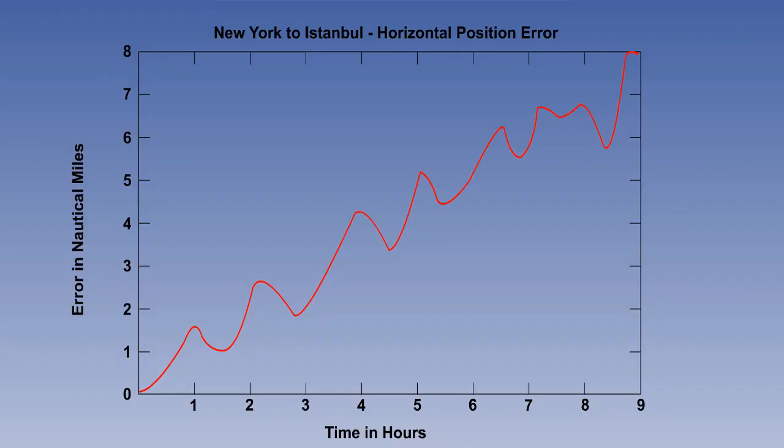Unlike our earlier diagrams which were idealized, this is an actual plot of INS against GPS on a test flight. The pattern can be clearly seen. There is a basic ramp increasing at approximately one nautical mile per hour, with a one-mile Schuller oscillation superimposed on it.